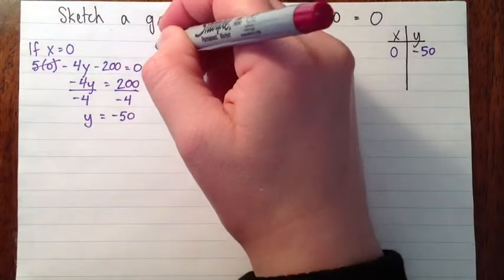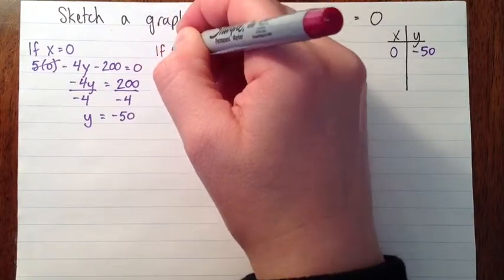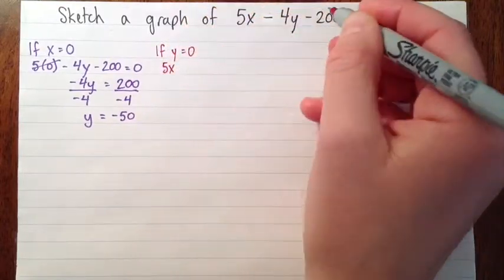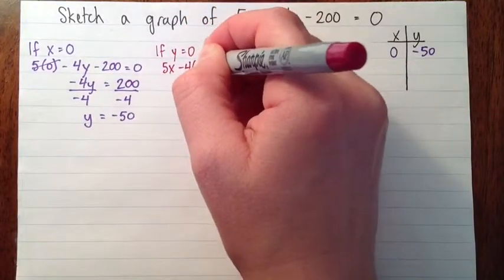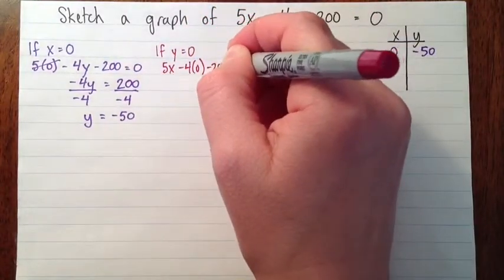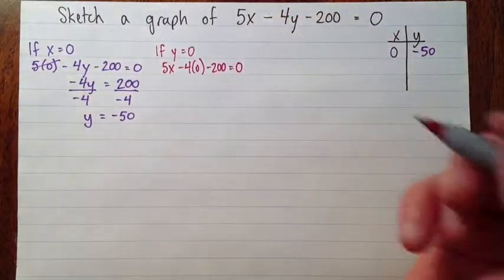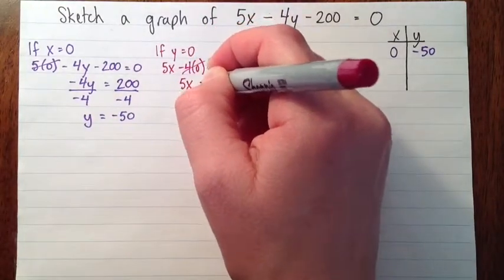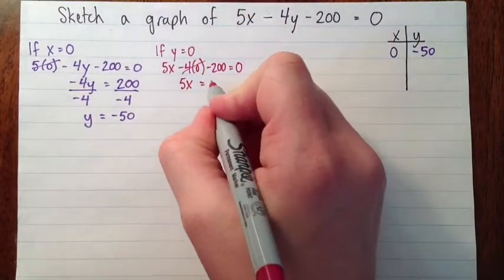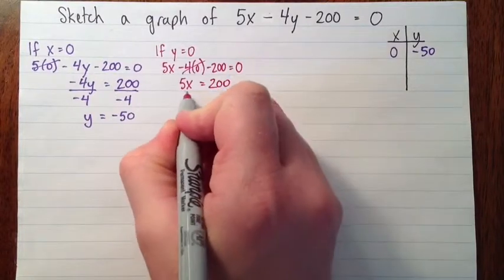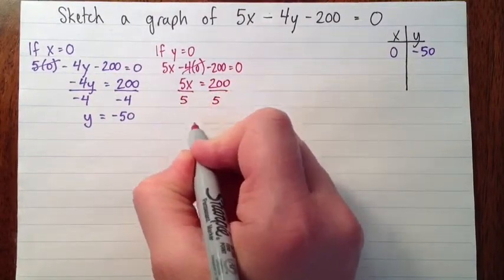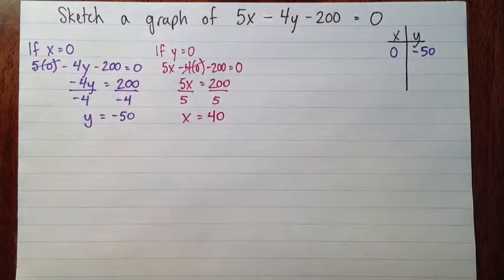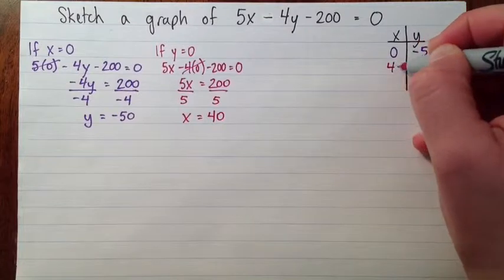Okay, next I'm going to say, well, what if y was 0? What would we get? So we get 5x minus 4 times 0 minus 200 equals 0. So 4 times 0 is 0. So we get 5x equals, and I'm going to add 200 to both sides. 5x equals 200. Then we divide by 5 and we get x equals 40. So if y is 0, then x equals 40.